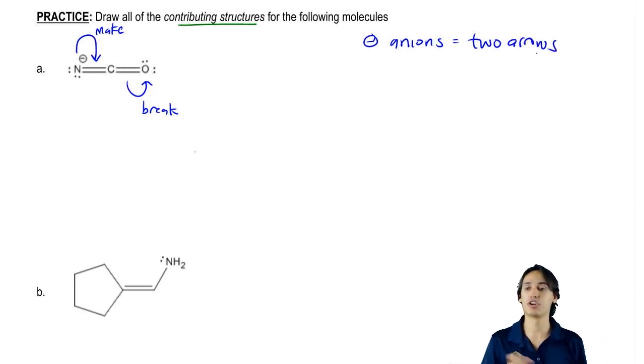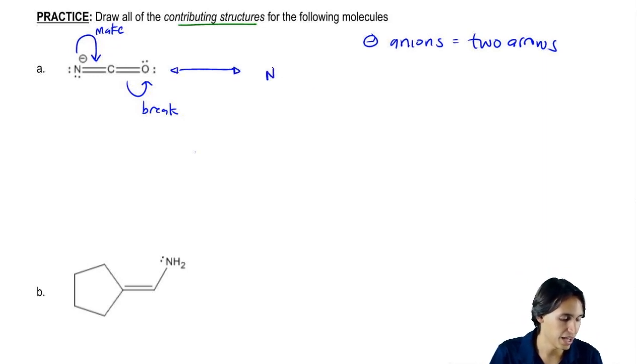And the reason is because any time you're making that new double bond, you're going to have to break a bond as well or a new pi bond. So what that's going to do is it's going to give me a structure that looks like this. Where now I have N with a triple bond, carbon and then an oxygen.